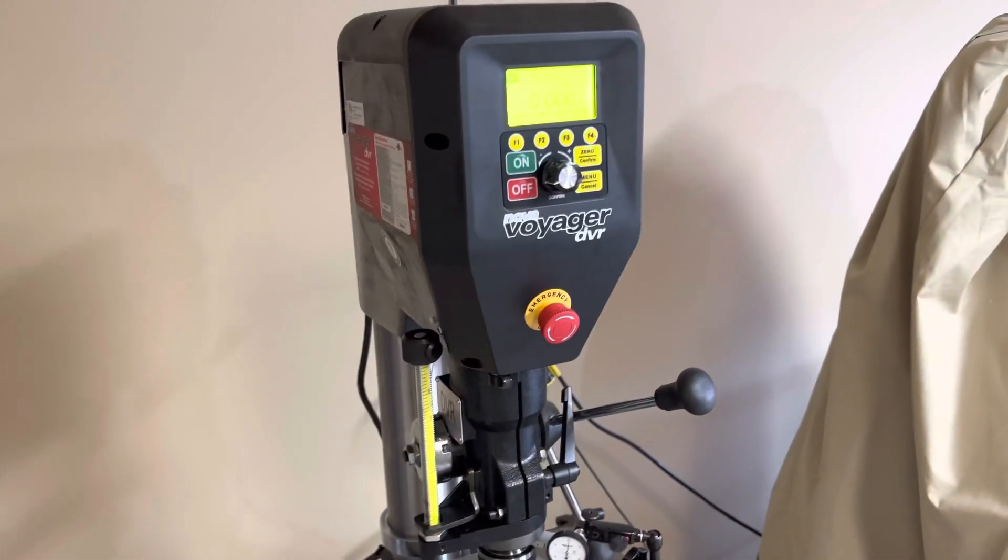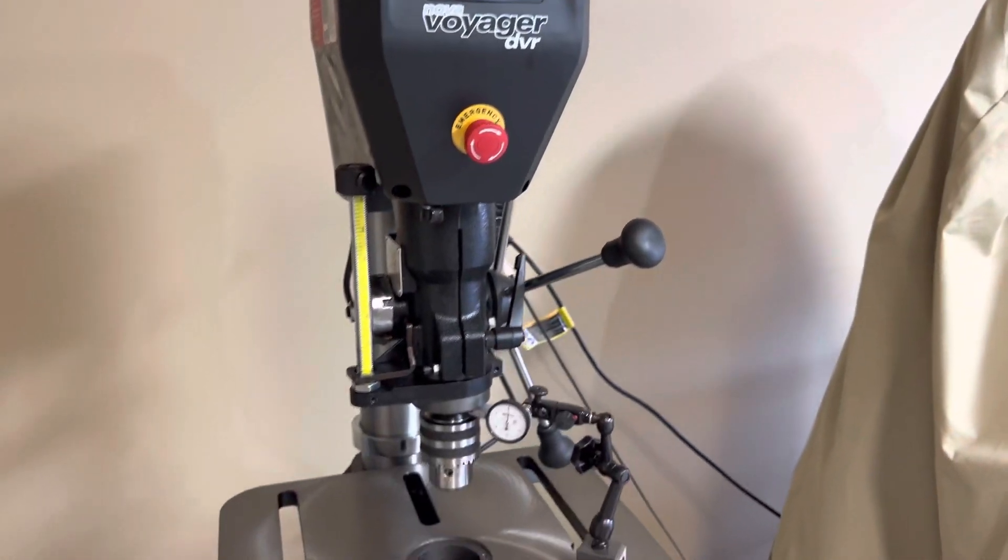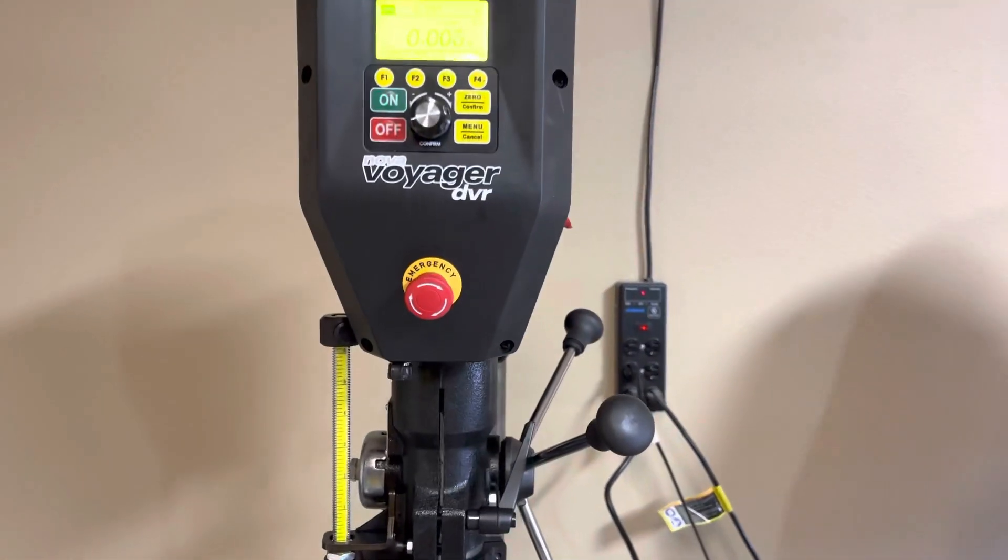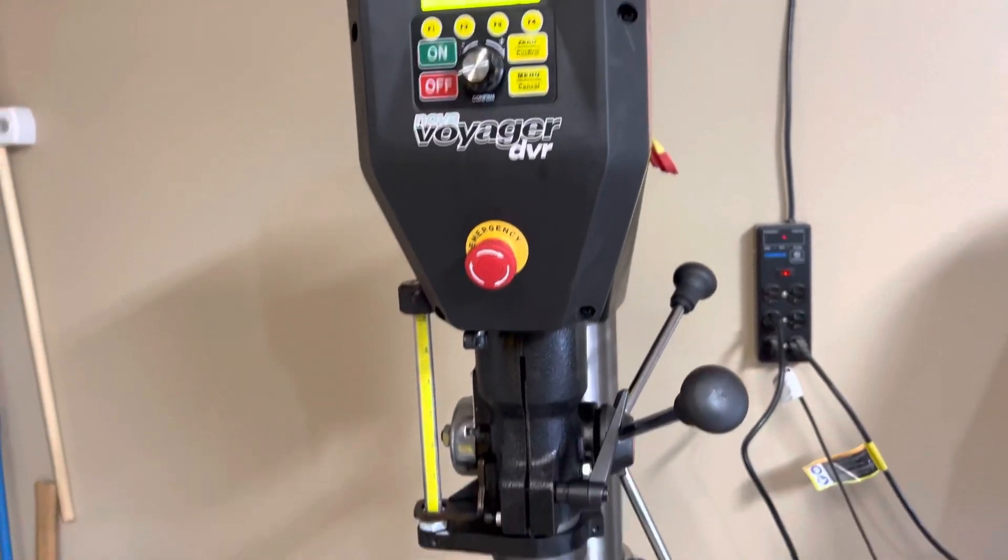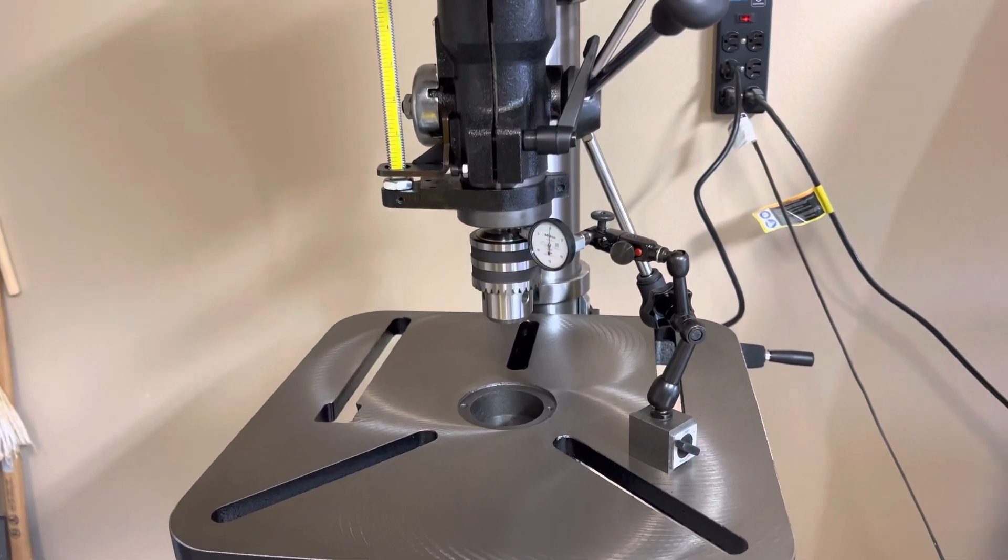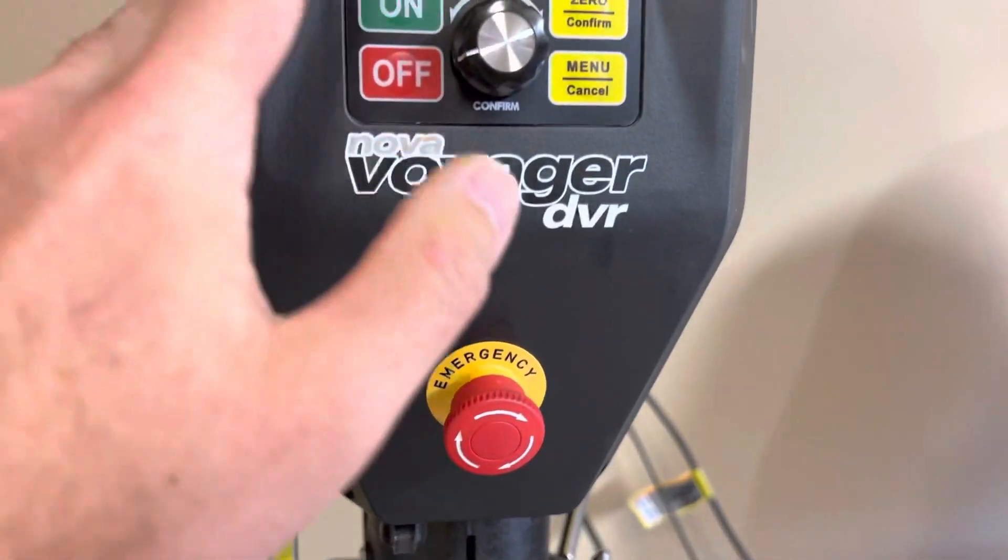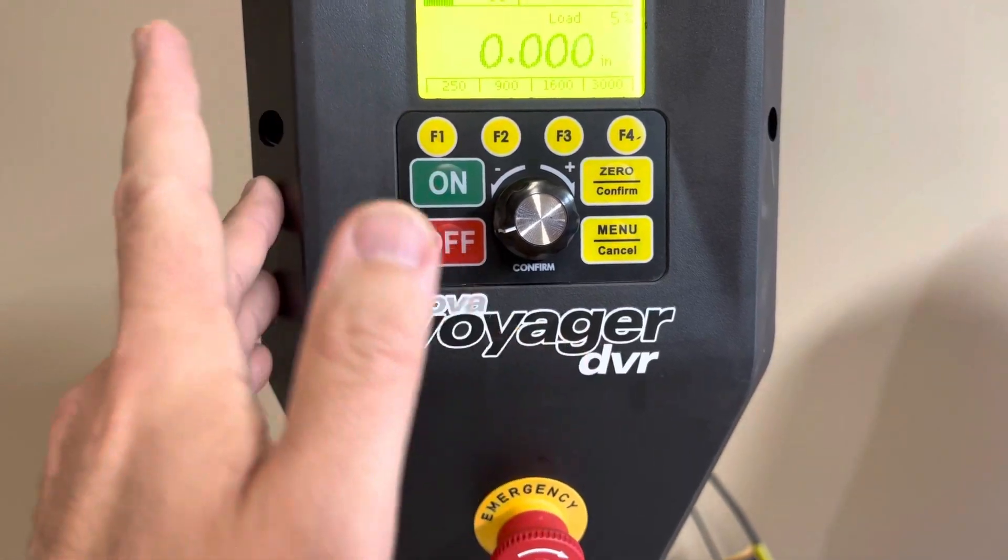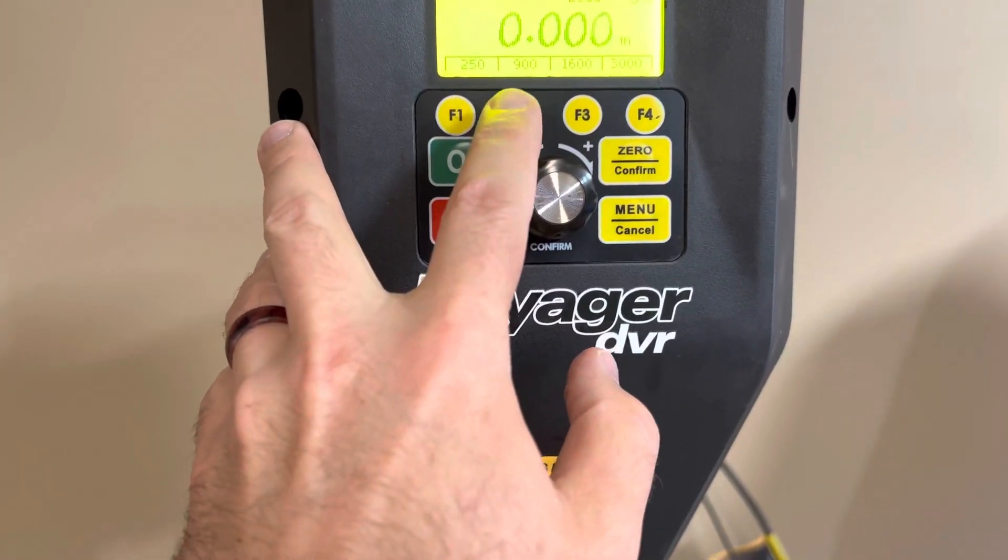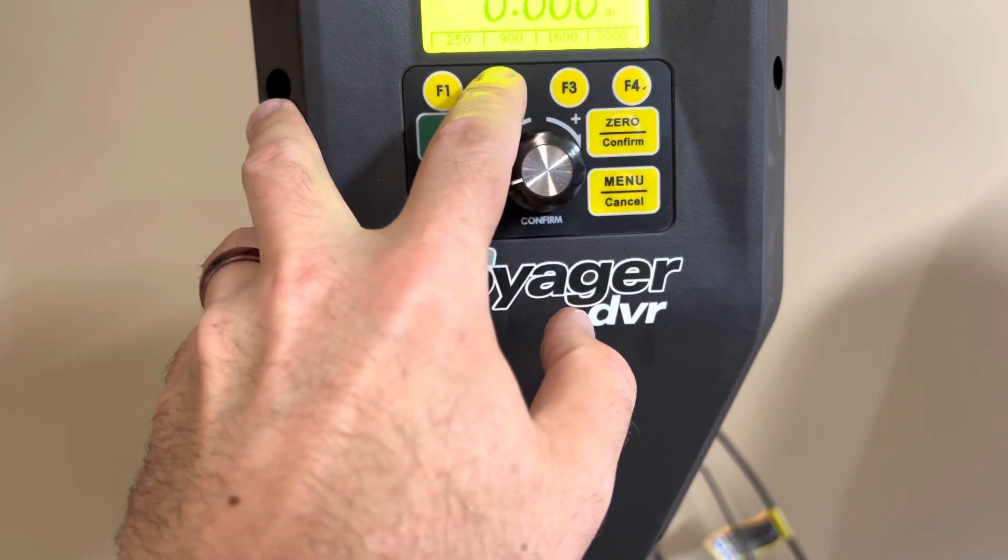Looking forward to using this. It's got a tapping feature where it stops at your set depth and reverses. Pretty cool. Probably just use these presets. They'll do like pick guard screws. Probably a Forstner bit for hogging out material.